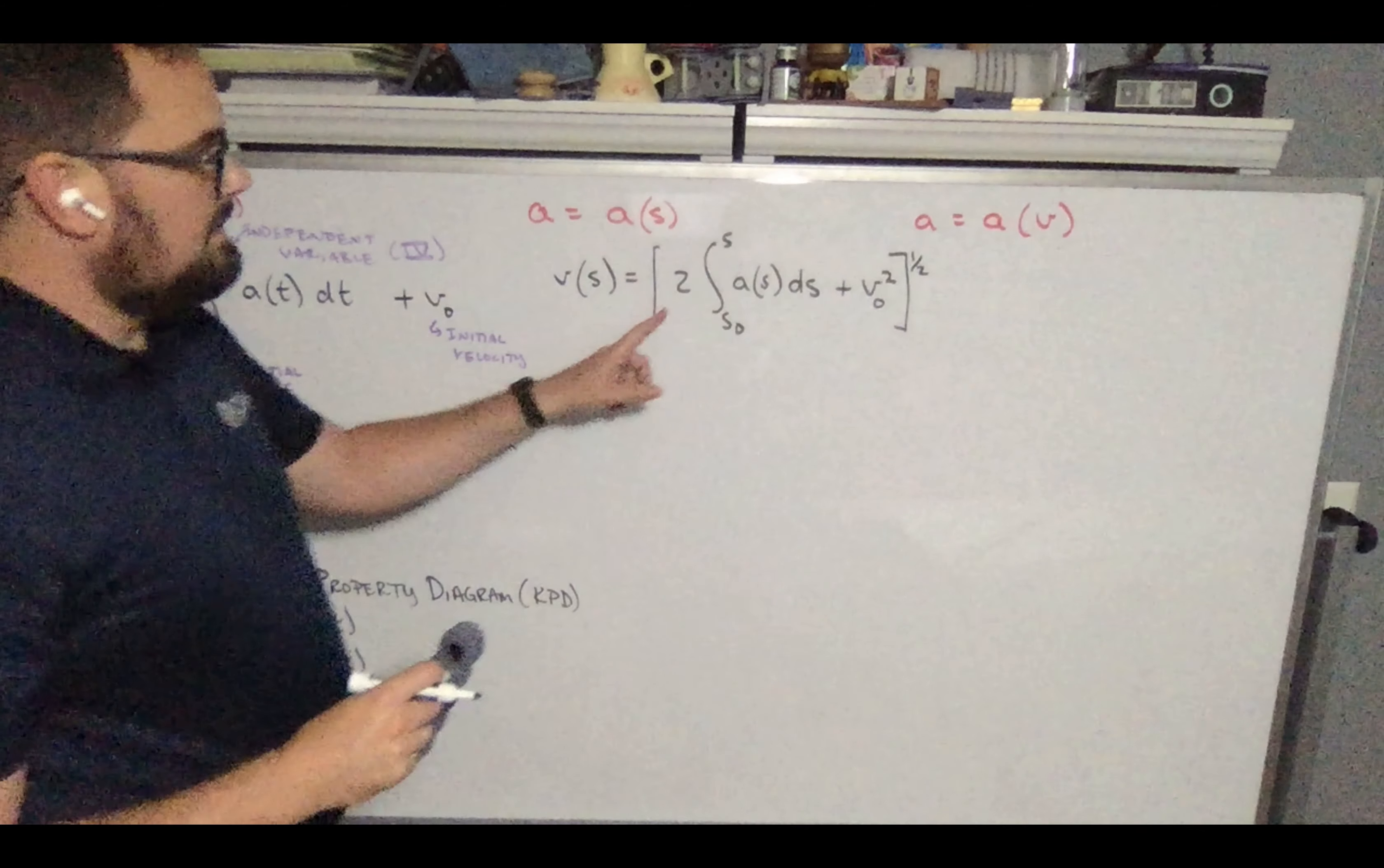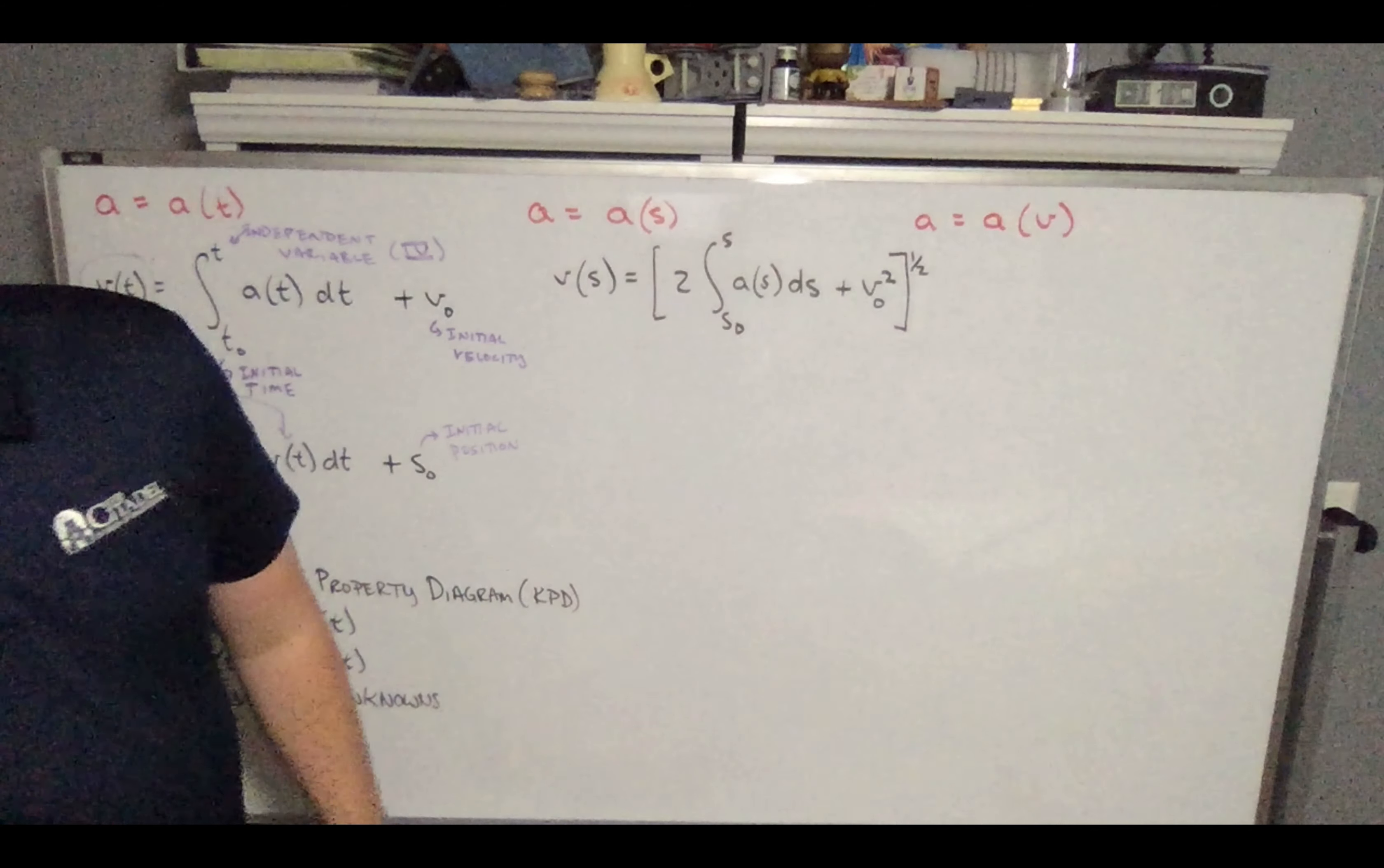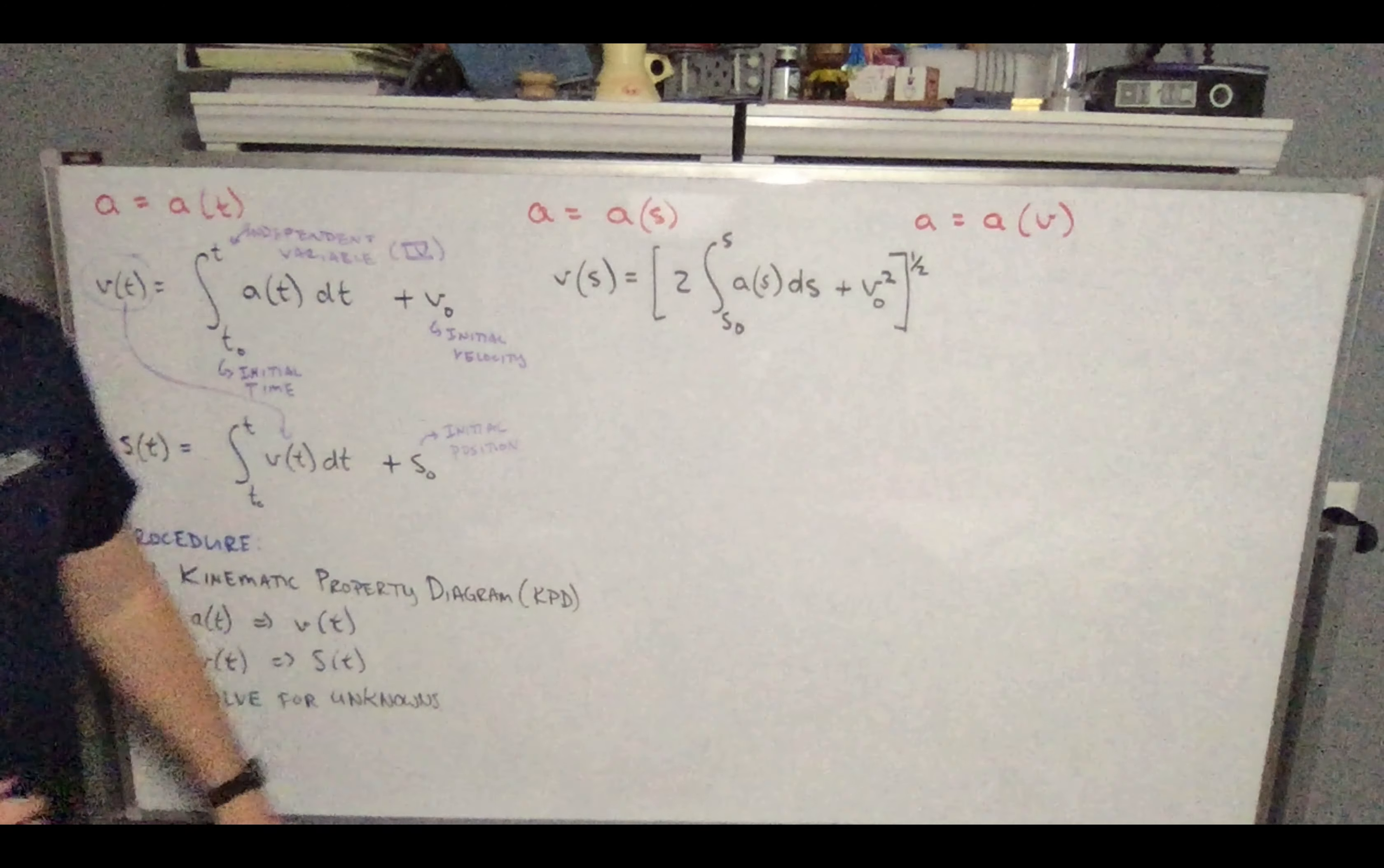So this is going to be two times the integration of acceleration as a function of position, plus V naught squared square rooted. So again, this is my initial velocity here. I've got my initial position now as part of my integration limits, all to find the velocity as a function of position. From there, I can find time as a function of position.